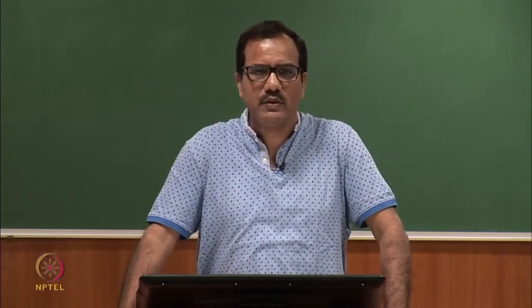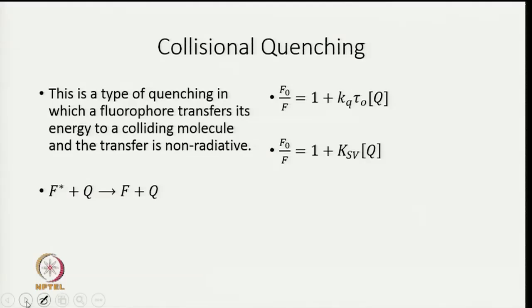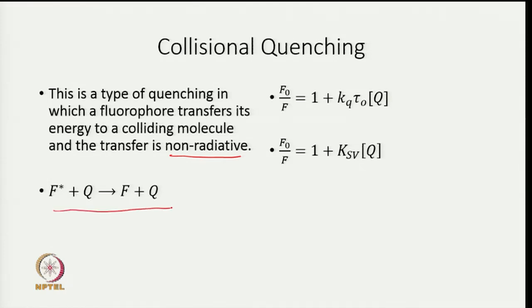In the last lecture I was discussing about two different kinds of quenching: one is collisional quenching and another is static quenching. Collisional quenching is also known as dynamic quenching. This is a type of quenching in which a fluorophore transfers its energy to a colliding molecule and the transfer is non-radiative. This point is very important — the transfer is non-radiative — and the whole process can be shown by this equation.